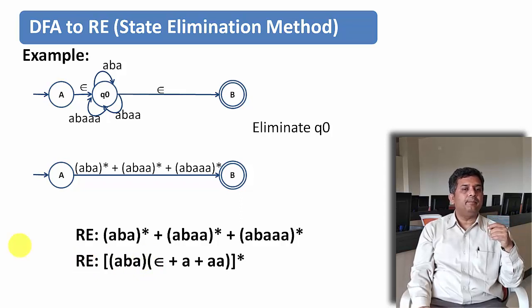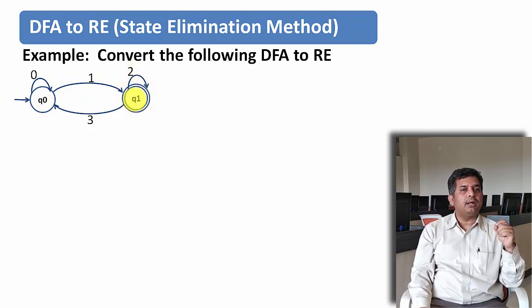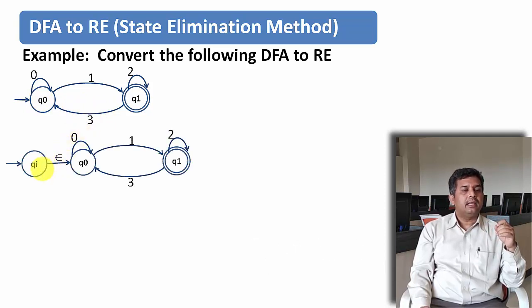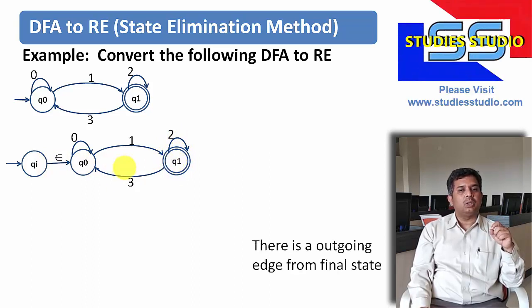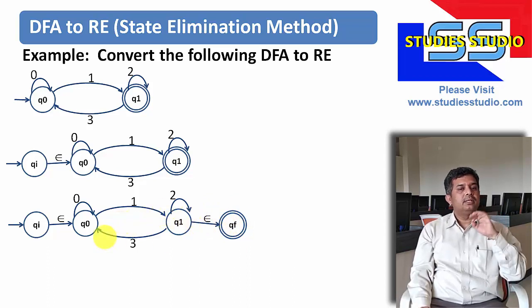Let us do one more problem. Here is a finite automata with two states. From q0 to q0 there is a transition on 0. From q0 to q1 there is a transition on 1. From q1 to q1 there is a transition on 2. From q1 to q0 there is a transition on 3. There is an incoming edge to the starting state, which is 3. So I will create one more state with an epsilon transition. Also, q1 is the final state and there is an outgoing edge from the final state, so I will create one more state qf with an epsilon transition from q1. Now we are ready to do state elimination.